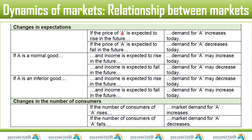Next is changing expectations. If the price of A is expected to rise in the future, demand for A will increase today. For example, with petrol: if there's an expectation that petrol is going up at midnight, people would go and queue up to fill their tanks today. And if the price of A is expected to fall in the future, demand for A would decrease today — like if you hear petrol is going down tomorrow, you won't fill up today; you'll wait and get a full tank at a cheaper price tomorrow.